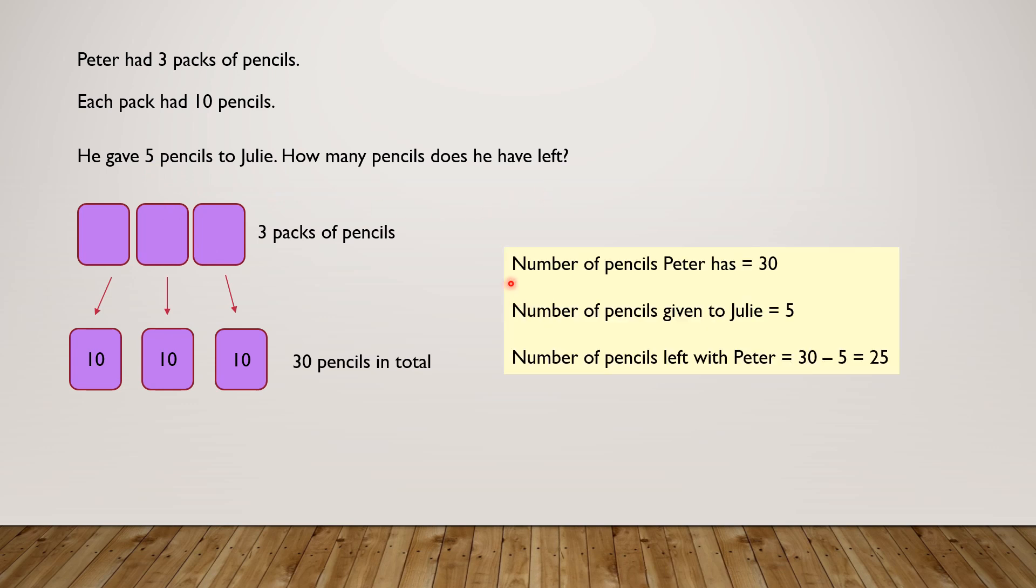So, the number of pencils Peter has are 30. The number of pencils given to Julie are 5. So, the number of pencils left with Peter should be 30 minus 5 equals 25.